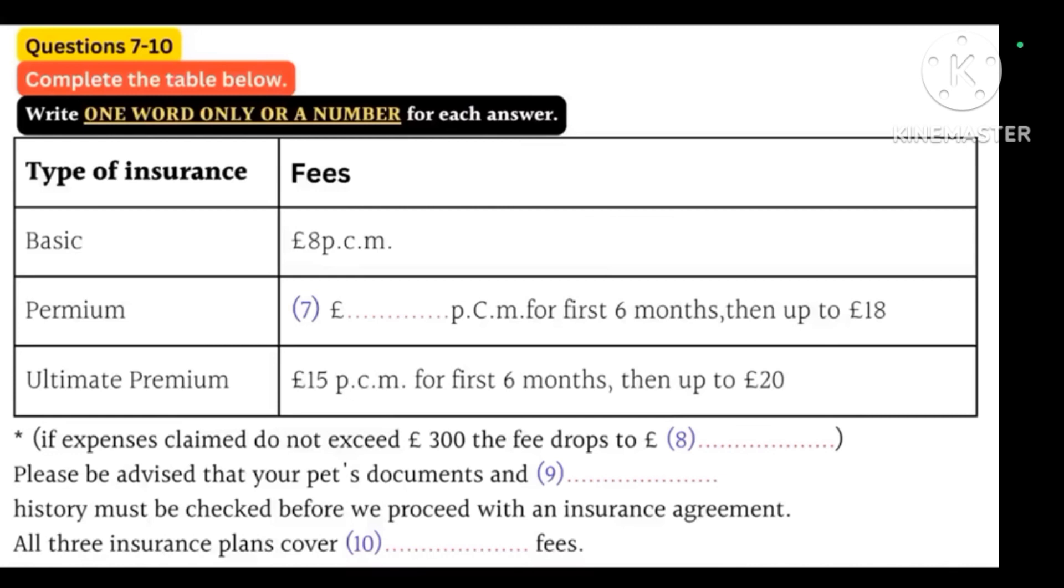Right. And the basic plan will cover...? Well, the basic plan covers veterinary fees, obviously, plus a few more things such as boarding costs, loss by theft or straying, advertising and reward, death by accident or illness. You can find a comprehensive list on our website, or I could forward it to you via email if you prefer. Thanks, I'll check the website. No problem. So, shall we book you an appointment so you can come over?